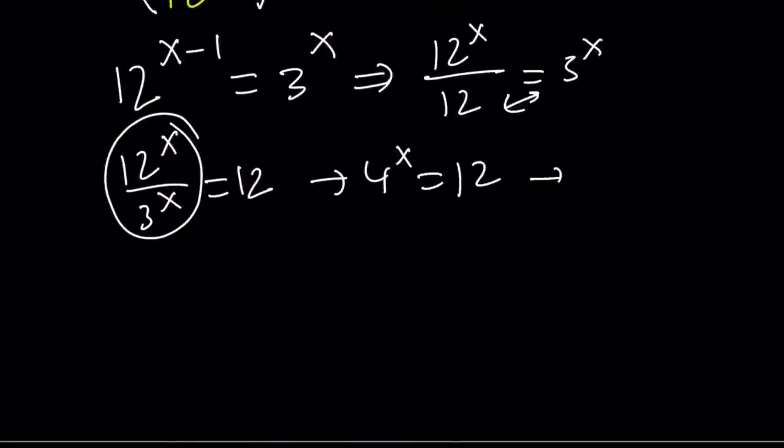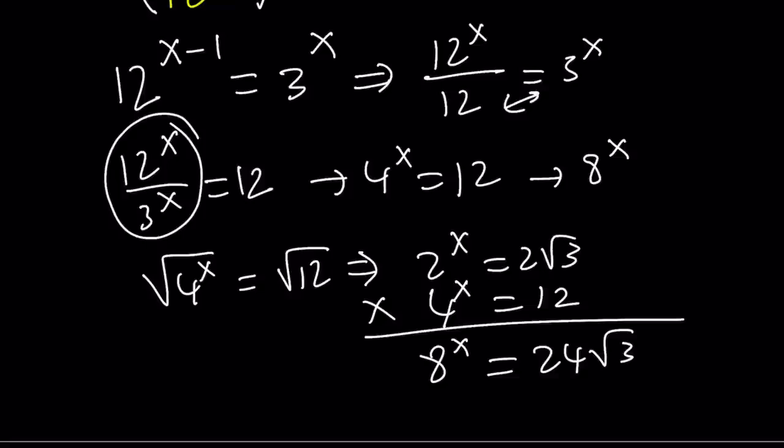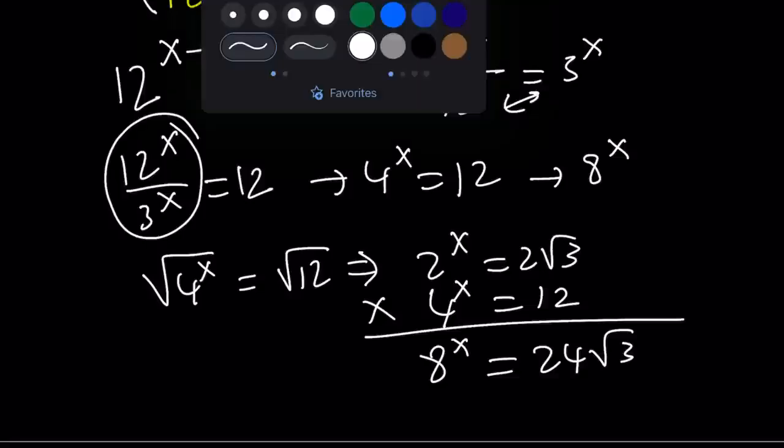Now we are supposed to find 8 to the power x from here. So let's go ahead and square root both sides again. And that's going to give us 2 to the power x equals 2 root 3. But I can use a slightly different approach. 4 to the x is 12. Let's go ahead and multiply these together to get 8 to the x, which is 24 root 3. So now let's talk about the third method.